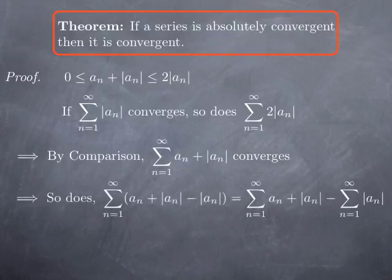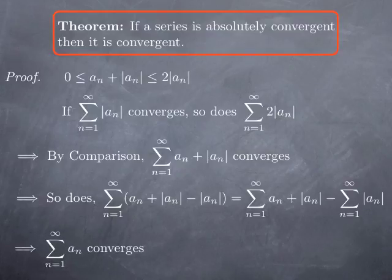We can write a_n = (a_n + |a_n|) - |a_n|, so the series Σa_n is the difference between two convergent series: Σ(a_n + |a_n|), which we proved convergent, minus Σ|a_n|, which is also convergent. Therefore Σa_n converges. So we have proved that if Σa_n is absolutely convergent, it is in particular convergent — absolute convergence is a stronger way of converging.